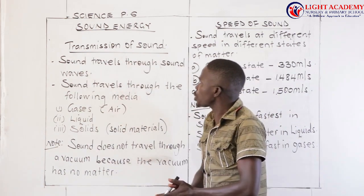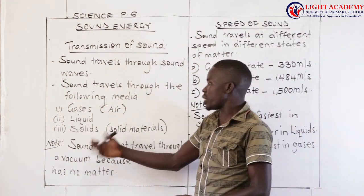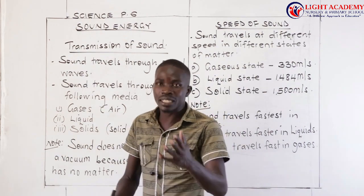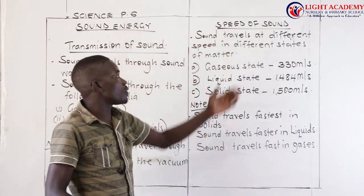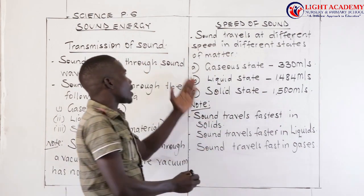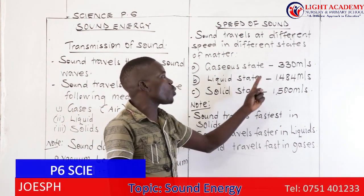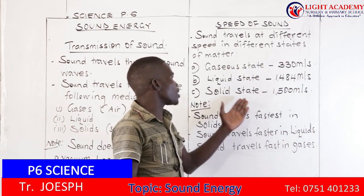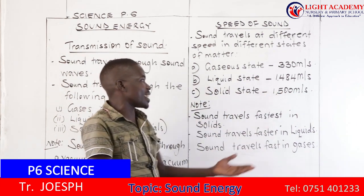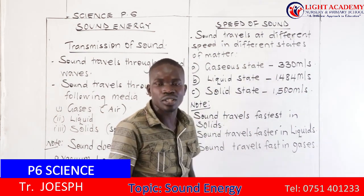I want us to go through transmission of sound. Sound travels through sound waves, and sound travels through the following media: gases, liquids, and solids. Sound does not travel through a vacuum because the vacuum has no matter — it has no medium of transmission. Sound travels at different speeds in different states of matter: gaseous state is 330 meters per second, liquid state is 1,484 meters per second, and solid state is 1,500 meters per second. We conclude that sound moves fastest in solids, faster in liquids, and fast in gases. That is our lesson.